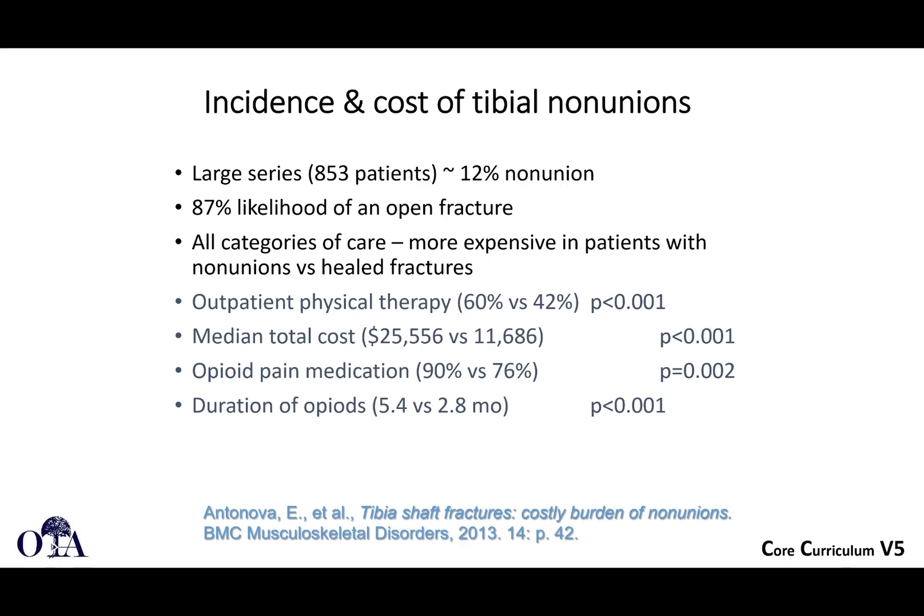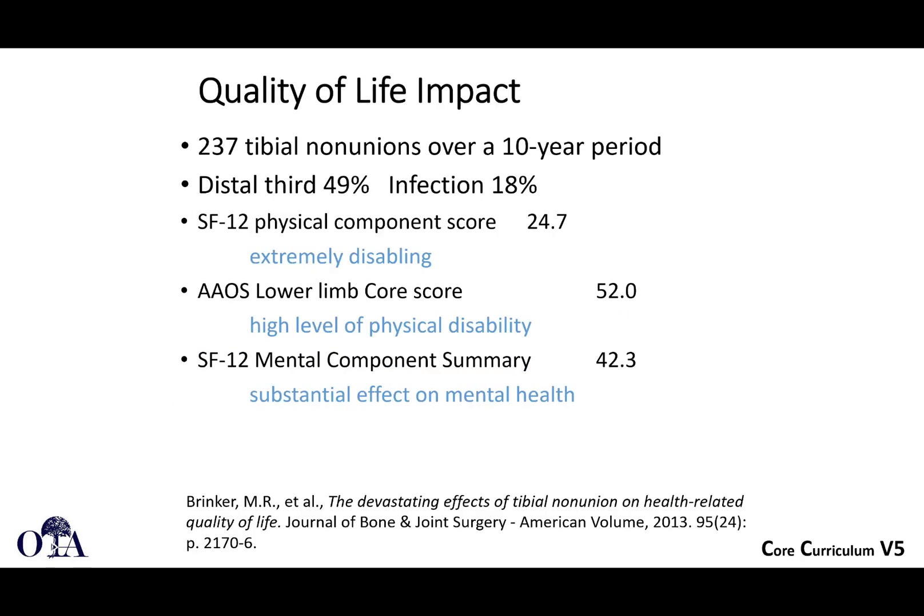Let's talk about the incidence and cost of tibial non-union. In this particular series, there was a 12% non-union rate in tibia fractures, with an 87% likelihood of that being an open fracture. This is very costly — patients tend to be on opioids for a longer period of time and are having multiple procedures, representing a significant health system cost as well as personal cost to the patient.